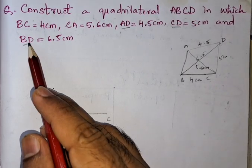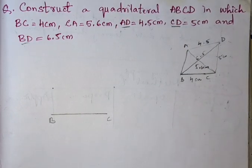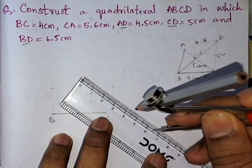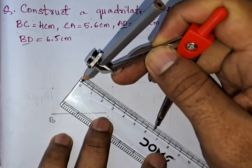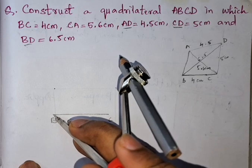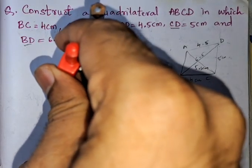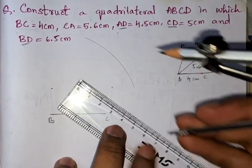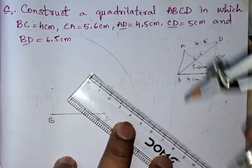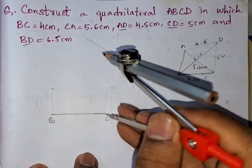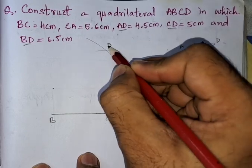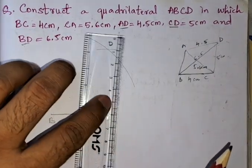From B and C we need to find point D. From B to D it is 6.5 centimeters, so we take the radius 6.5 centimeters, place it over point B, and draw an arc. Next, from C to D it is 5 centimeters, so we draw another arc of 5 centimeters from C. The point where these two arcs meet is point D.